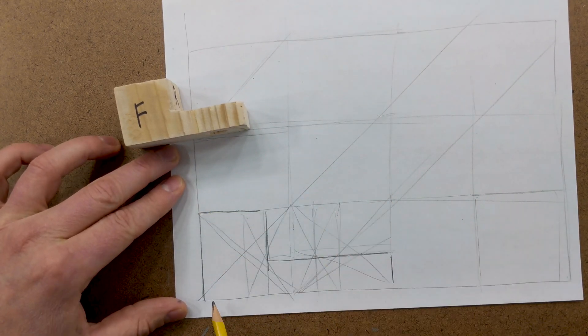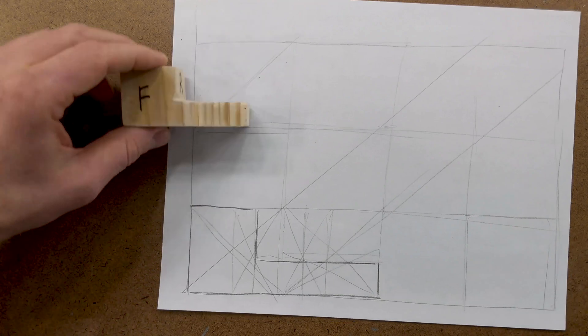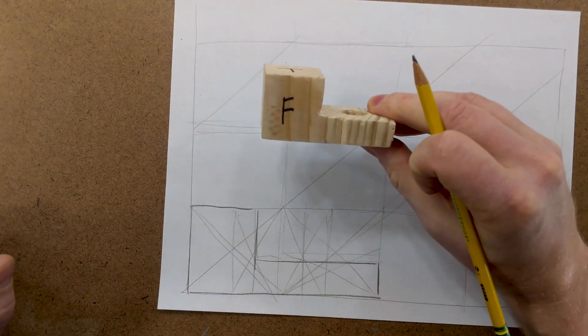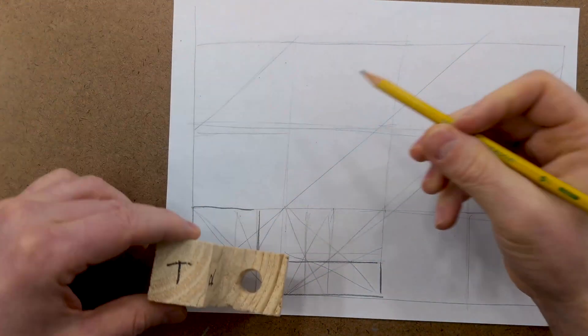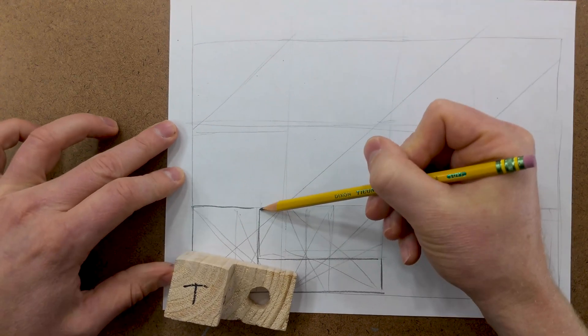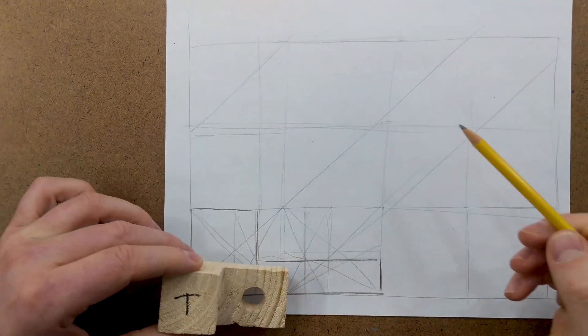And remember, we're going to dimension this out, so if you make mistakes, it's no big deal. You're just trying to communicate what this object looks like. Then we can go ahead and project this line up to right here.